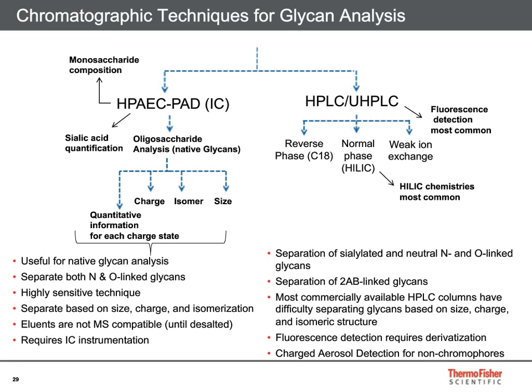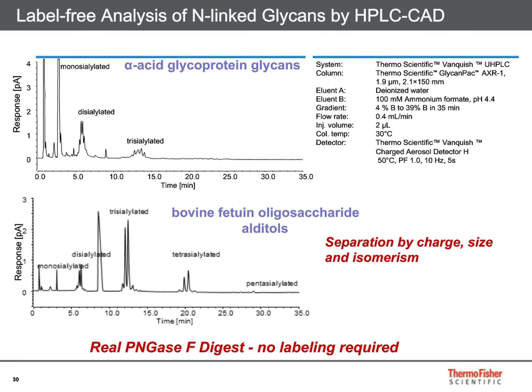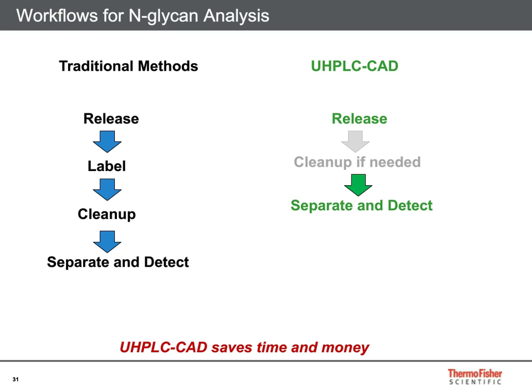Today I'd like to focus on newer applications using HPLC with charged aerosol detection for the direct determination of glycans. Here we see a very simple label-free and direct method for quantitative glycan profiling: the N-linked glycans are released from proteins by the enzyme PNGase F, and the native glycans are then separated by UHPLC on the GlycanPac AXR-1 column, which employs both weak anion exchange and reversed-phase separation mechanisms to resolve glycans based on charge, isomeric structure, and size. The native N-linked glycans are then detected directly without derivatization by using charged aerosol detection, eliminating the time and expense of labeling.